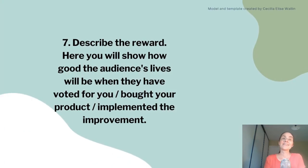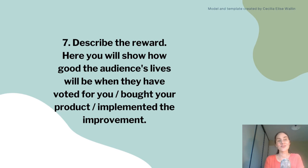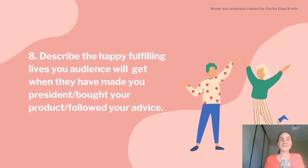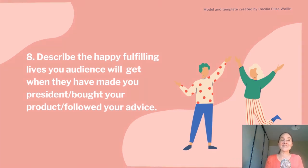Number seven: describe the reward. Here you will show how good the audience's lives will be when they have voted for you, bought your product, or implemented the improvement. Number eight: describe the happy, fulfilling lives your audience will get when they have made you president, bought your product, or followed your advice.